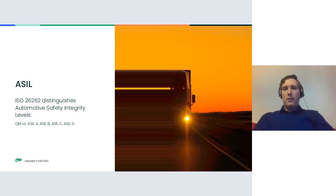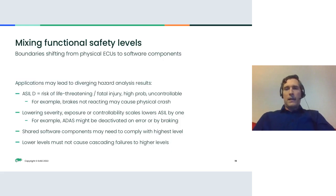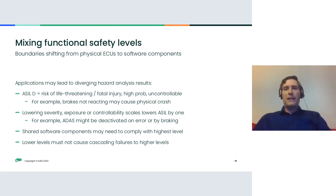Another important term from ISO 26262 is ASIL — Automotive Safety Integrity Level. There are also other markets beyond automotive using similar safety integrity levels. For automotive, we distinguish between quality-managed code versus ASIL A, B, C, and D — with D being the highest level.